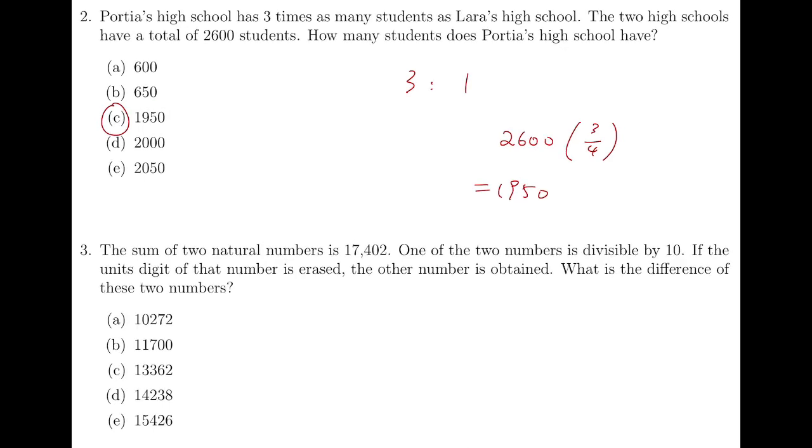Let X be the smaller number. So larger number is then 10X. Now the sum of these two numbers is 17402, and we're supposed to find the difference. So the answer is this number times 10 minus 1 over 10 plus 1. And so the answer is 14238, which is D.